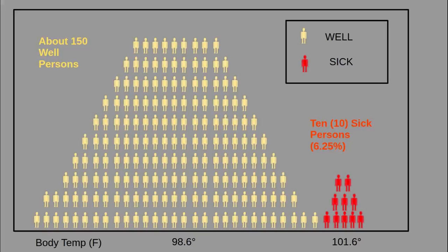This slide shows the first example, with only 6.25% of people sick. In this example, a group of about 160 people are tested. About 150 are well — they're healthy — illustrated by the gold figure icons. In contrast, 10, or about 6.25%, are sick with a fever and actual symptoms, illustrated by the red figure icons.